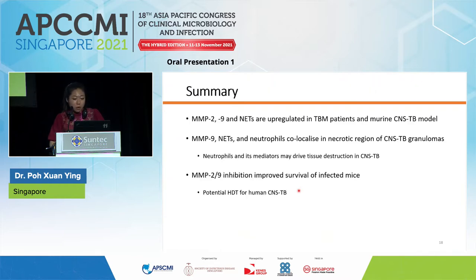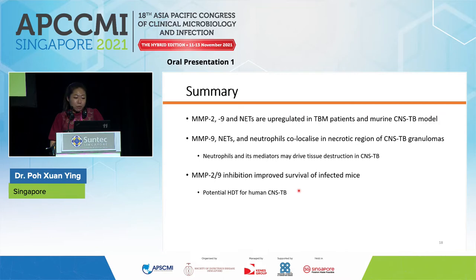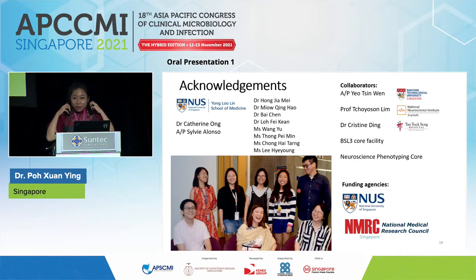In summary, MMP2, MMP9, and NETs are significantly upregulated in both humans and the murine CNS TB model. Co-localization of MMP9, NETs, and neutrophils in the necrotic region of CNS TB granulomas suggests that neutrophils and their associated mediators may drive tissue destruction in CNS TB. MMP2 and MMP9 inhibition improved survival of infected mice and provides useful preliminary data for future host-directed therapy in human CNS TB. Thank you for your kind attention.